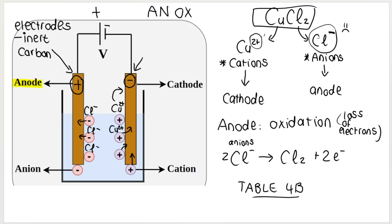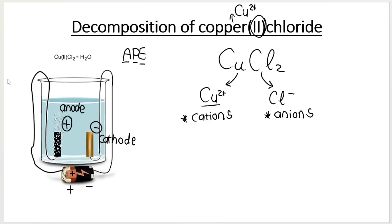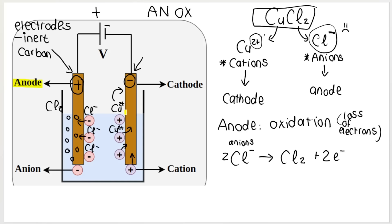What that means is that you will see little bubbles of gas forming here at the anode — that's the chlorine gas being released. So if you take a look at the first photo, those bubbles are the chlorine gas being released. That's what happens at the anode.